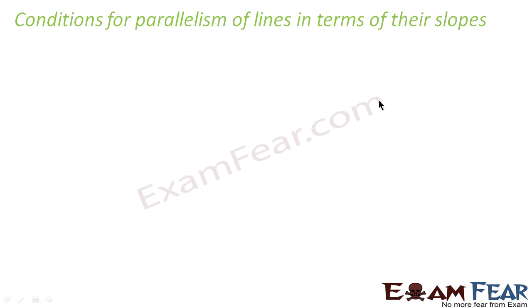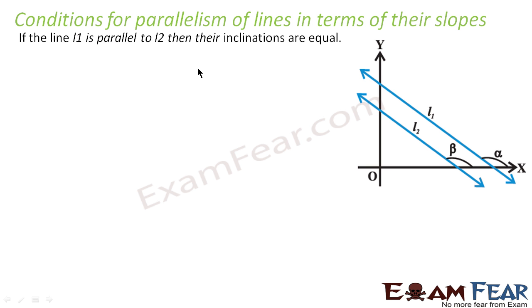Now let's discuss some conditions for parallelism of lines in terms of their slope. So if line L1 is parallel to L2, we see that these lines are parallel. That means these angles are equal. That's what is written here. That means α is equal to β. So if both these lines have equal inclination with the X axis, then these lines are said to be parallel.